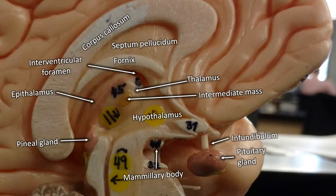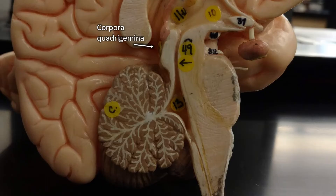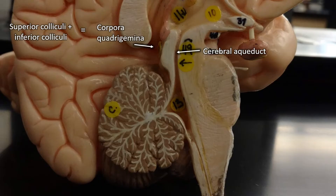There's the mammillary body, which is sort of in front of the midbrain. On the back of the midbrain are the corpora quadrigemina — there are two pairs of bumps. The top pair are the superior colliculi and the bottom pair are the inferior colliculi. Running through the midbrain is the cerebral aqueduct, which drains the third ventricle into the fourth ventricle.